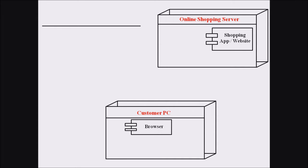Now we discuss the internal components of these nodes. In the Customer PC node, there is a component known as the browser. This browser is a software component represented with a component symbol — a rectangle with tabs. The browser is an internal software component of the Customer PC node. In the case of the Online Shopping Server, there is a component known as the shopping app or shopping website, which is hosted on that particular server. These are the two different components associated with this online shopping activity.